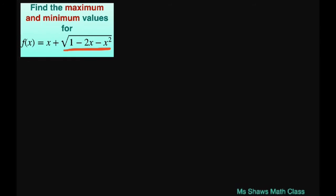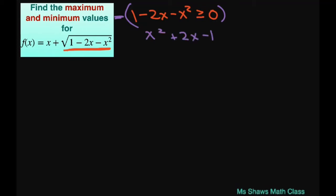To do that, let's set 1 minus 2x minus x squared greater than or equal to 0. Now I'm going to negate this to make it easier to look at because we're going to have to use the quadratic formula. When I negate this whole thing, we're going to get x squared plus 2x minus 1 is less than or equal to 0.